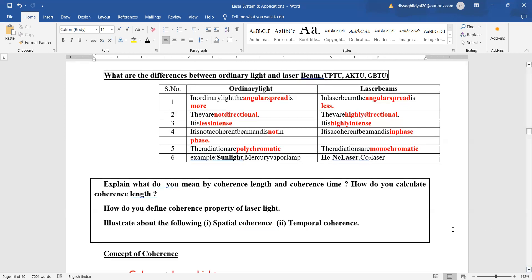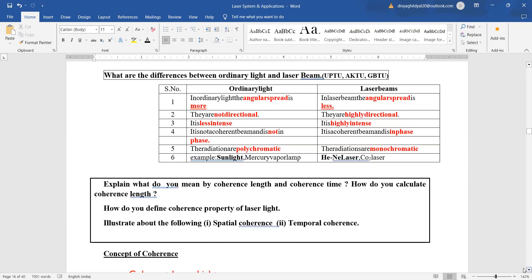Now this question is asked a lot in section A and B both: what do you mean by coherence length and coherence time? How do you calculate coherence length? Or how do you define the coherence property of laser beam? And discuss in detail spatial coherence and temporal coherence. This is important. So let us begin.